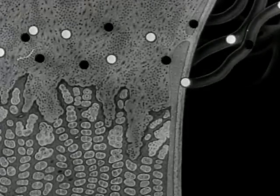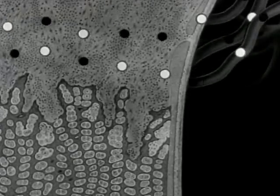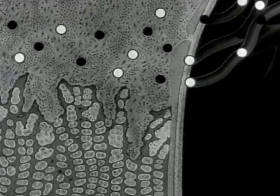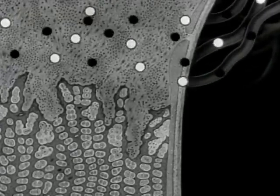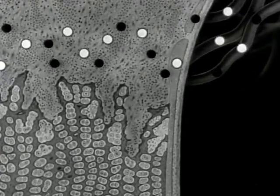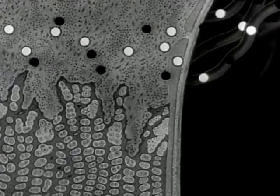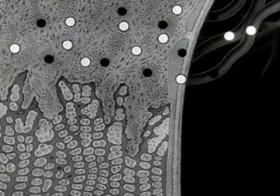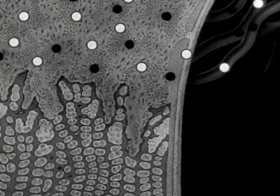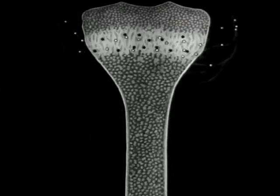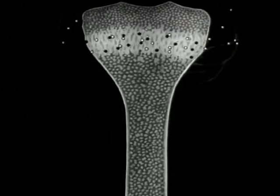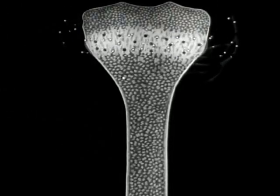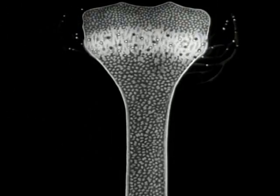Fehlt das Vitamin-D, so haben Kalk und Phosphor nicht die Möglichkeit, sich zu verbinden. Ungenutzt schwimmen diese Stoffe in der Blutbahn davon. Die Entwicklung ist gestört und es kommt zu rachitischen Knochenauftreibungen und Verkrümmungen.